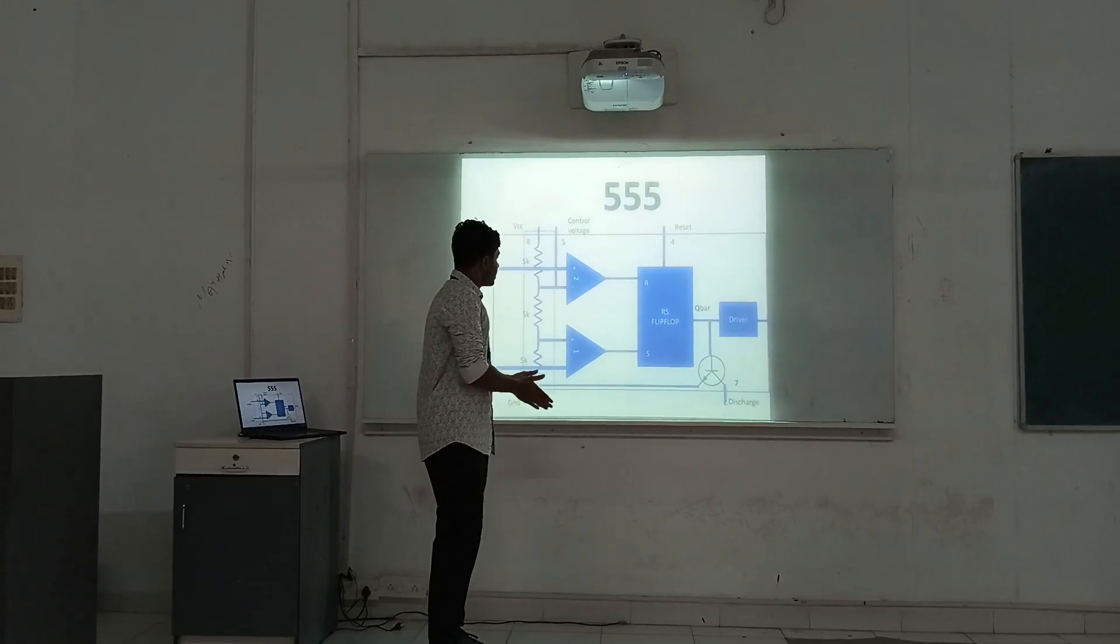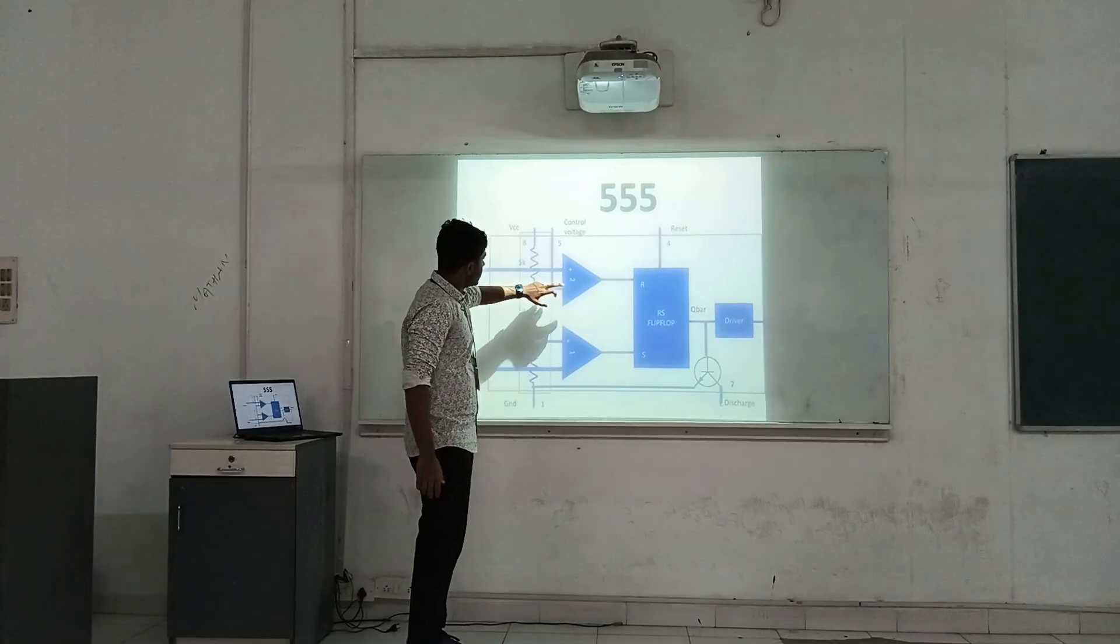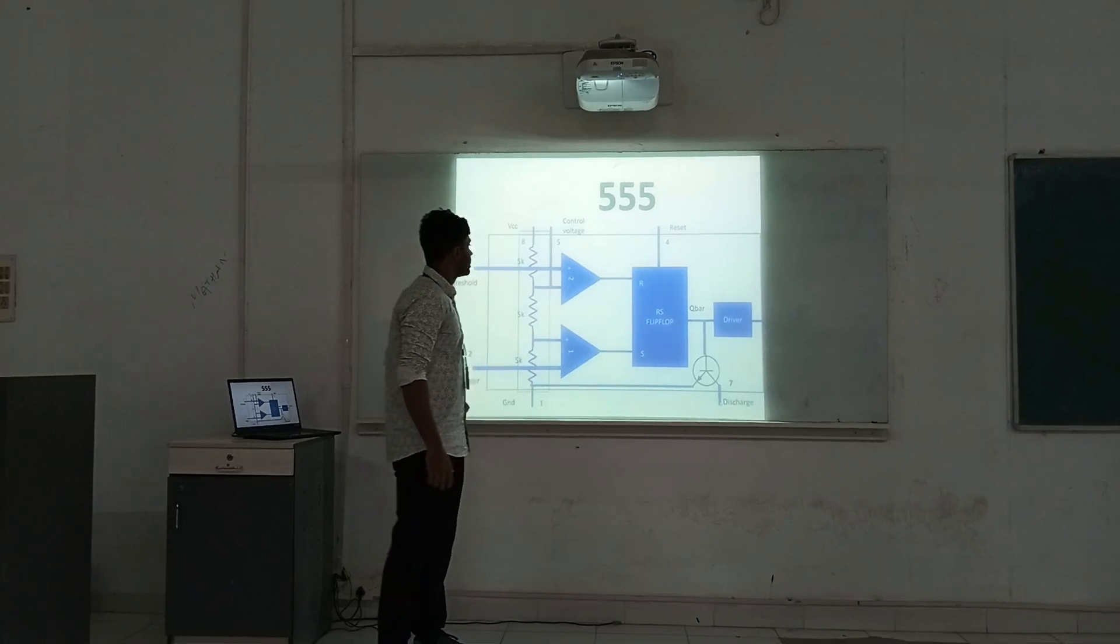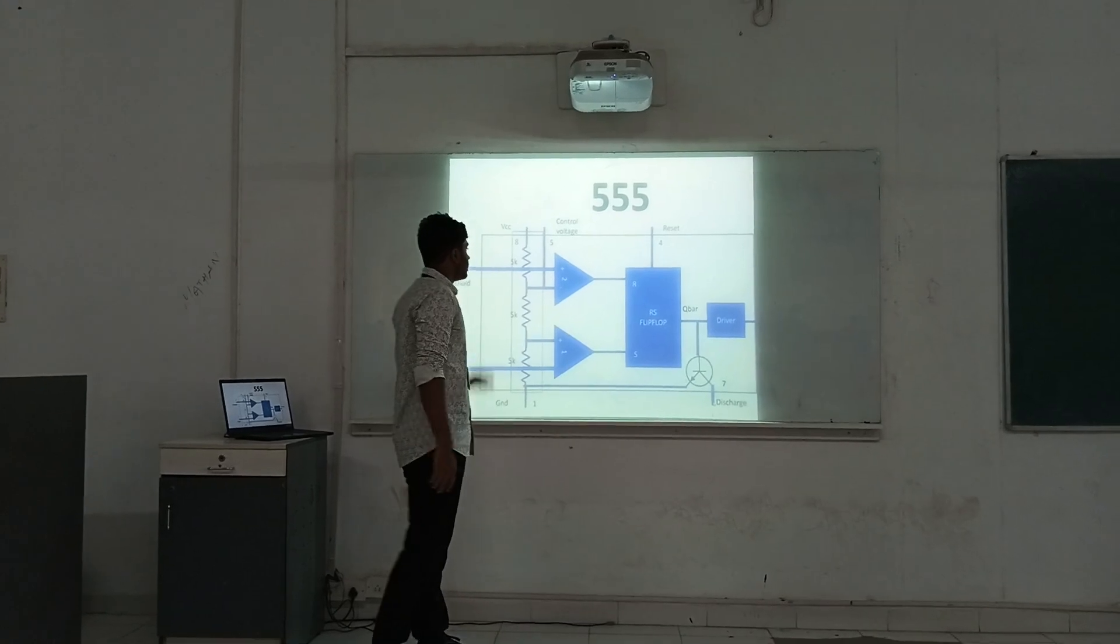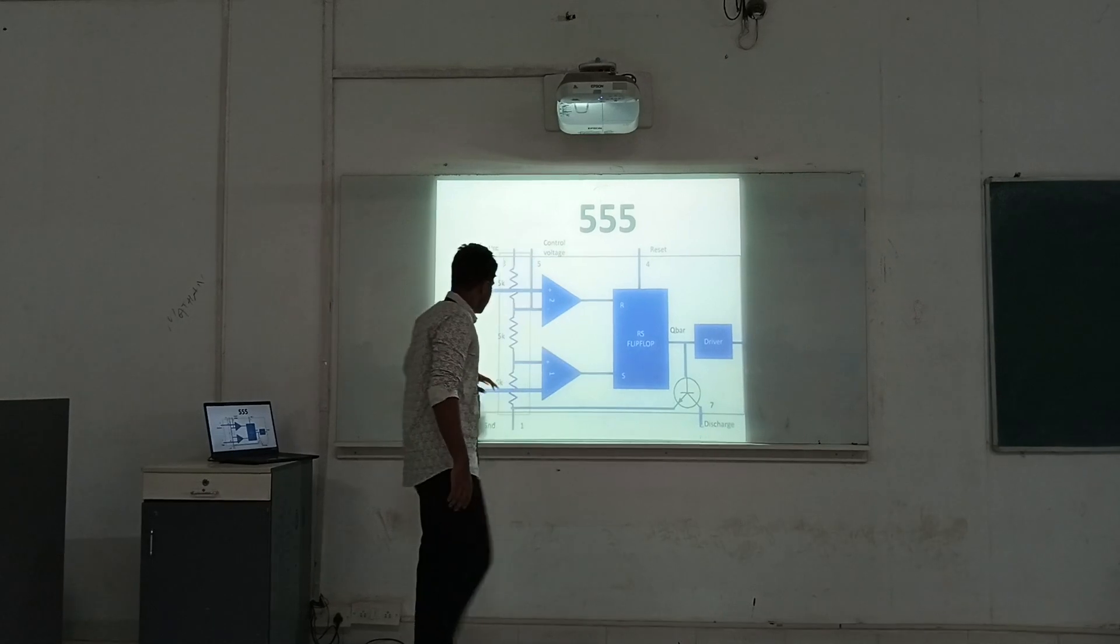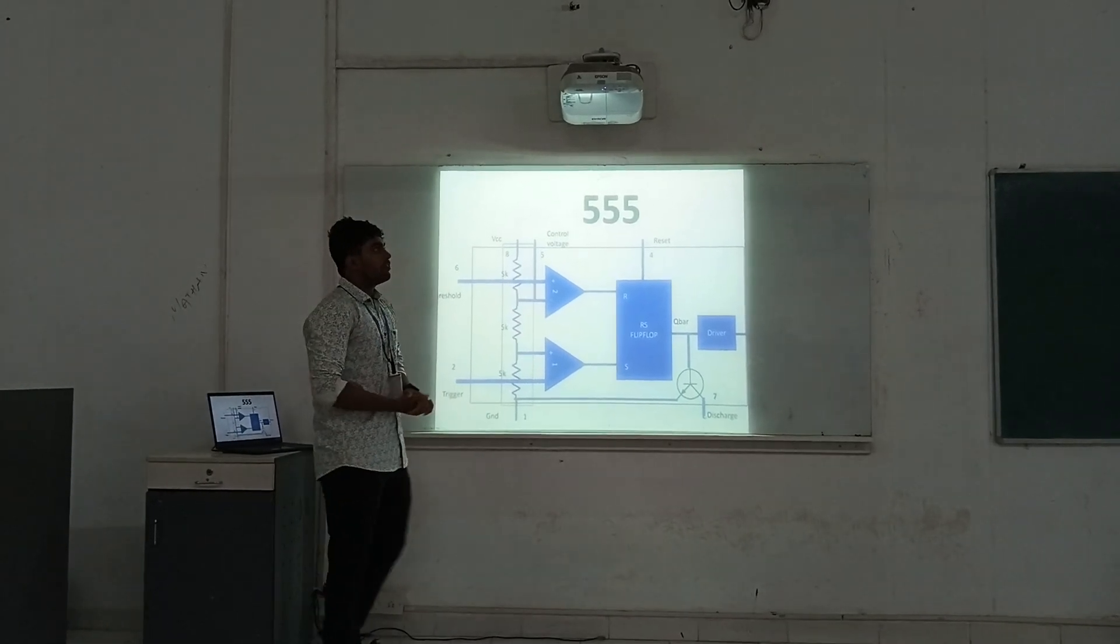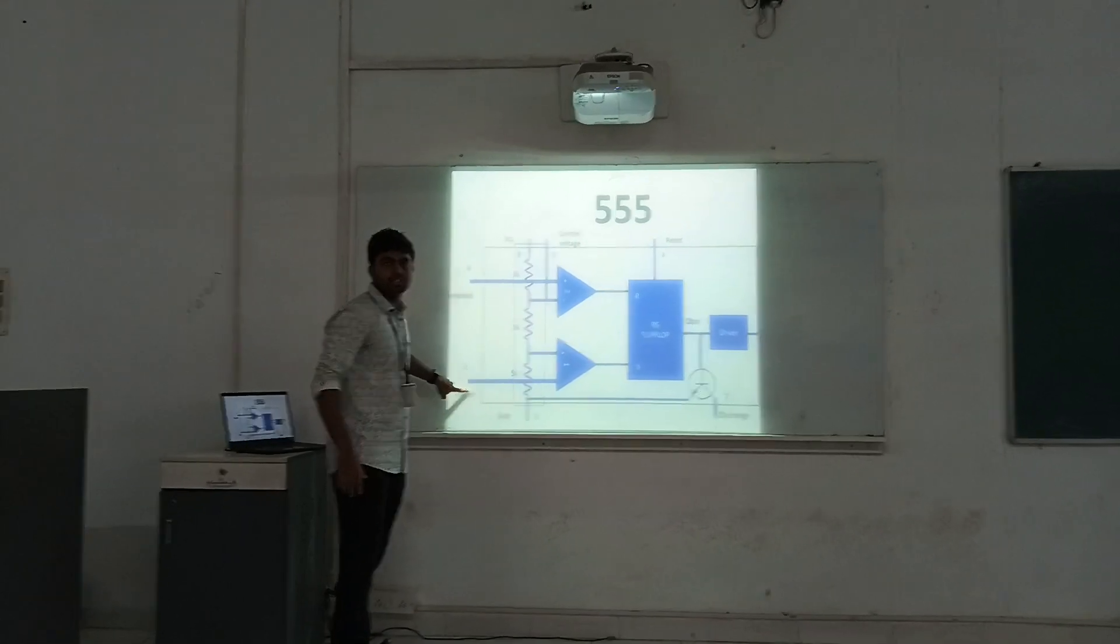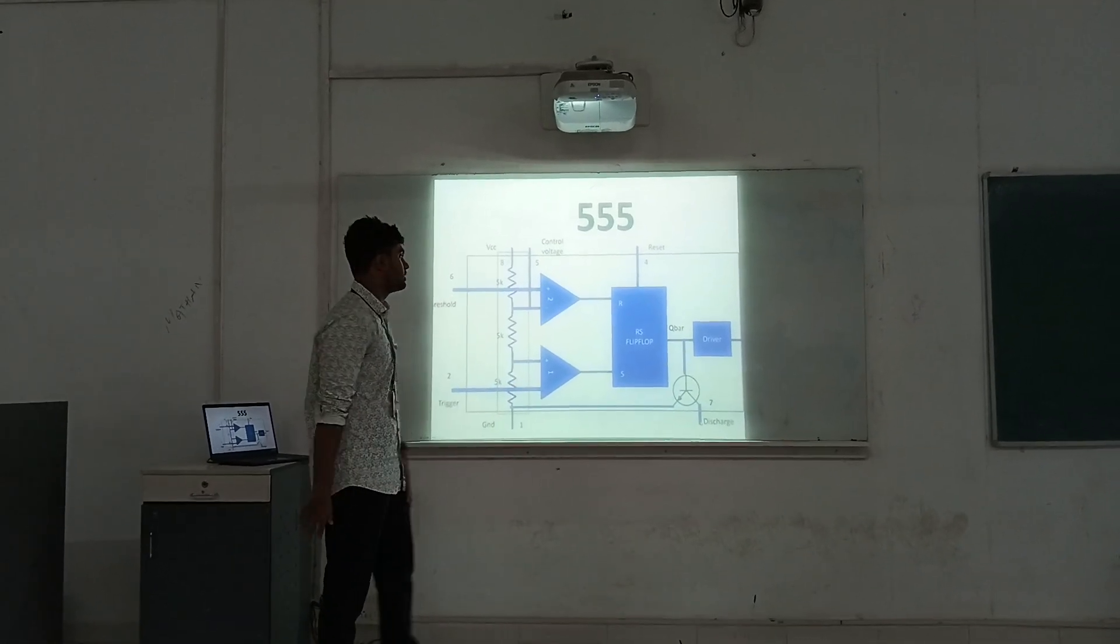For the comparator, the operating principle is based on op-amp. It has an inverting terminal and non-inverting terminal. Here also inverting terminal and non-inverting terminal. Non-inverting terminal should have a higher voltage compared to the inverting terminal. When the higher voltage is reached, the output is high. If we need to generate a signal using 555 Timer IC, then we need to give an input as a trigger pulse. Then only we will be generating the signal using the 555 Timer IC.